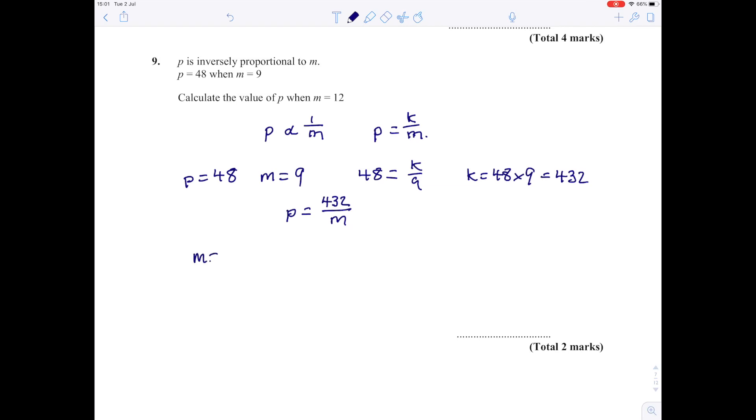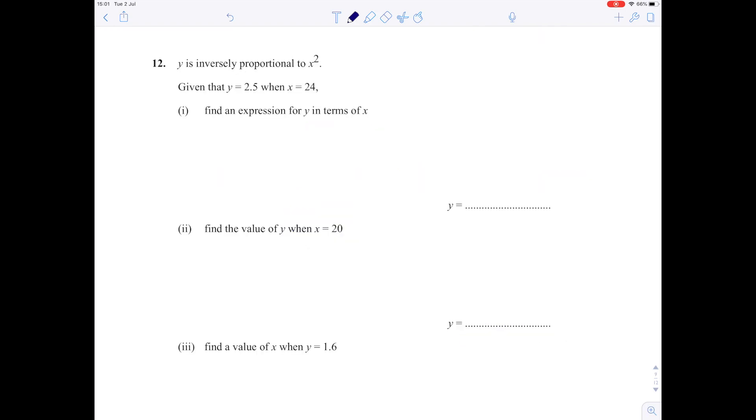Calculate the value of p when m equals 12. Substituting that into our equation: p equals 432 over 12, which is 36. So when m is 12, p is 36.